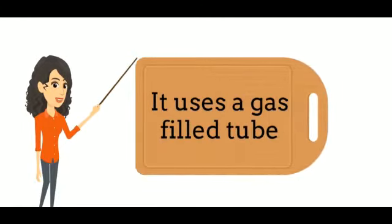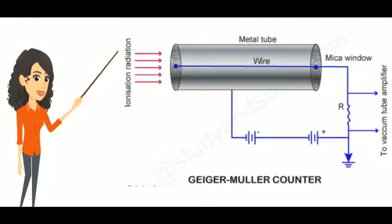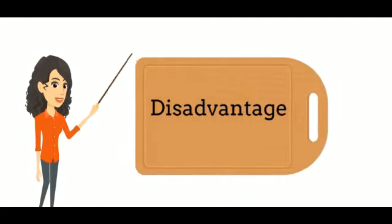It uses a gas-filled tube with a central wire at high voltage to collect the ionization produced by incident radiation. This is Geiger-Müller-Counter. The main disadvantage is that it can detect alpha, beta and gamma radiations, but it cannot distinguish between them.